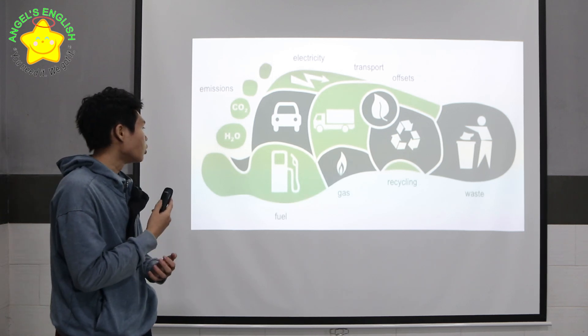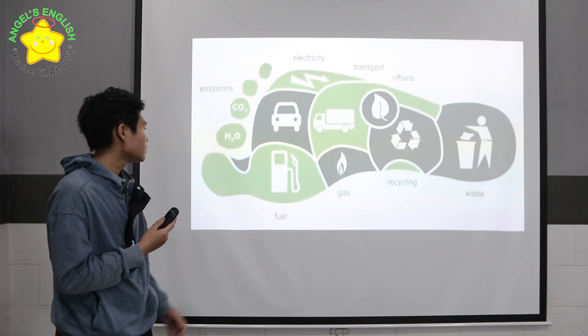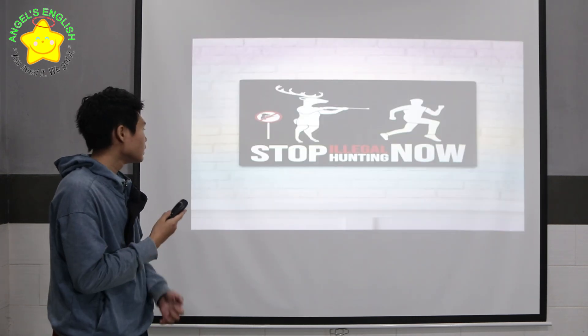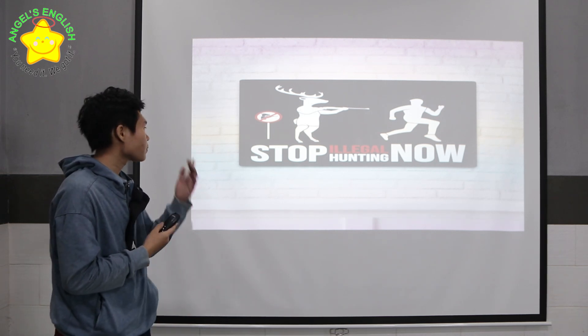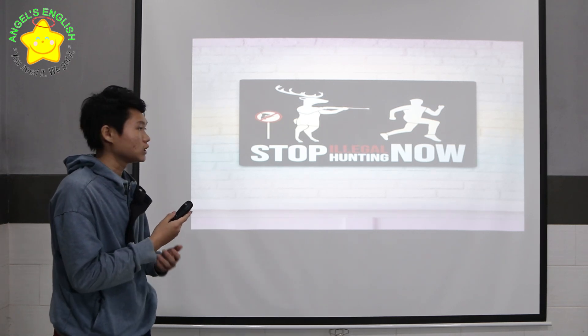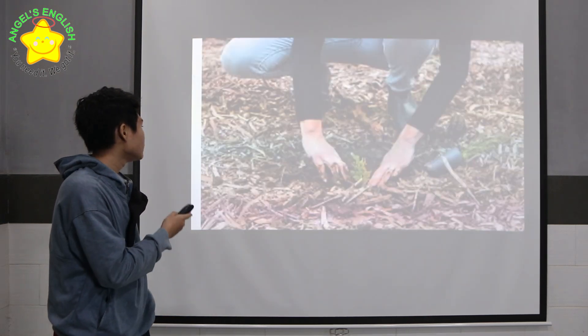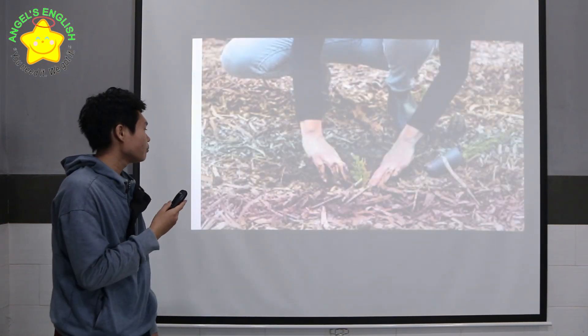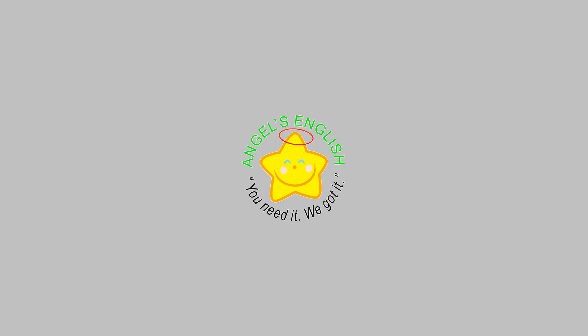So, what can we do to protect the indentured species? First, we can reduce our carbon footprint, stop illegal hunting, or stop using products which are made from indentured species. We can also stop using pesticides and grow native plants. Thank you for listening!